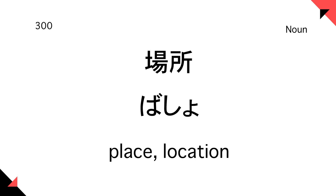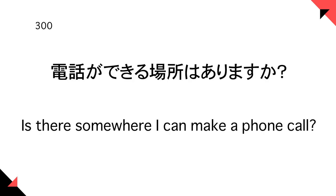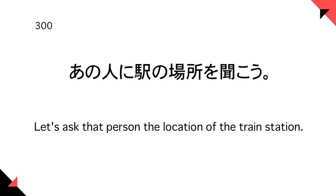場所 — Place, Location. 電話ができる場所はありますか? Is there somewhere I can make a phone call? あの人に駅の場所を聞こう。 Let's ask that person the location of the train station.